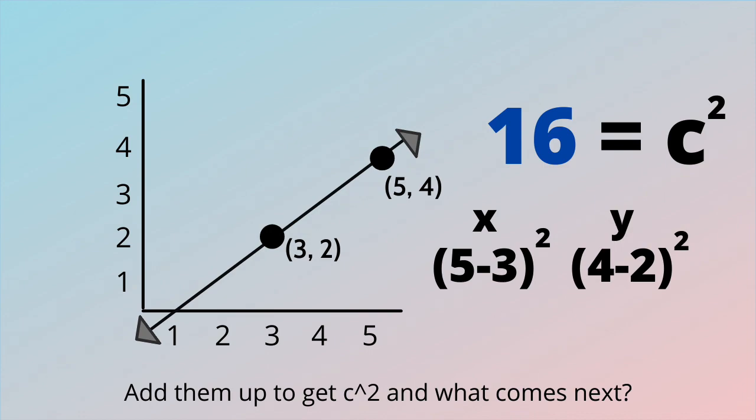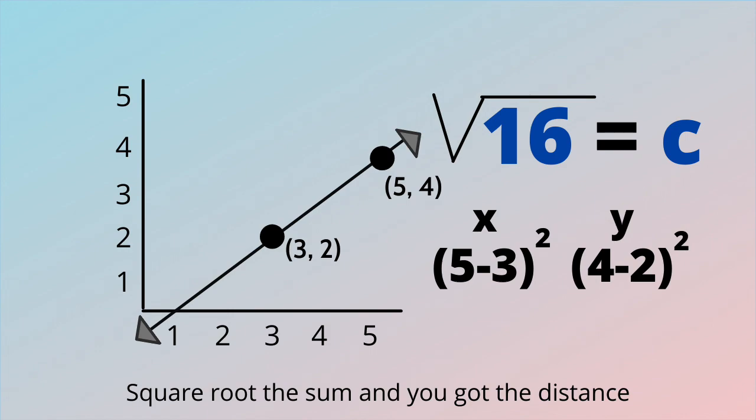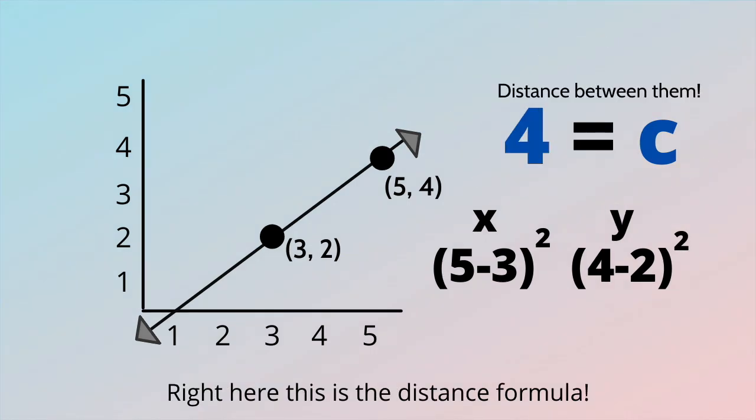Add them up to get c squared, what comes next? Square root the sum and you've got the distance, right here this is the distance formula.